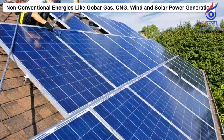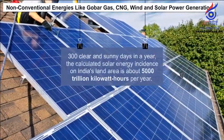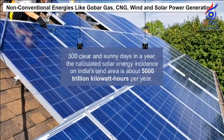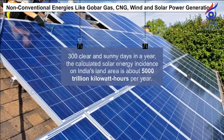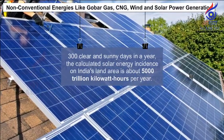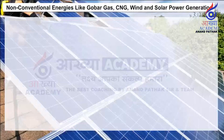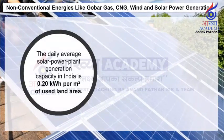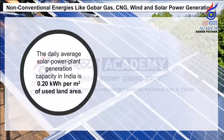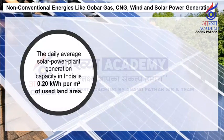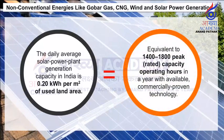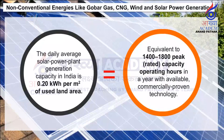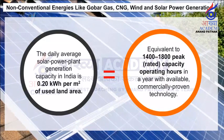With about 300 clear and sunny days in a year, the calculated solar energy incidence on India's land area is about 5,000 trillion kilowatt-hours per year. The daily average solar power plant generation capacity in India is 0.20 kilowatt per square meter of used land area, equivalent to 1,400 to 1,800 peak-rated capacity operating hours in a year with available commercially proven technology.